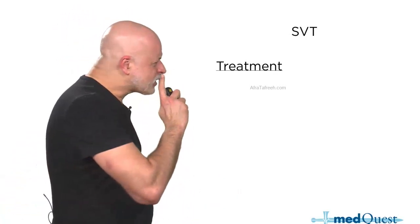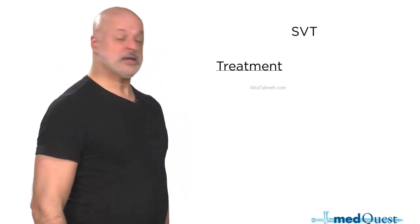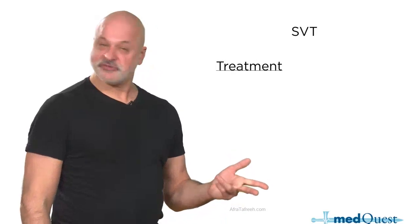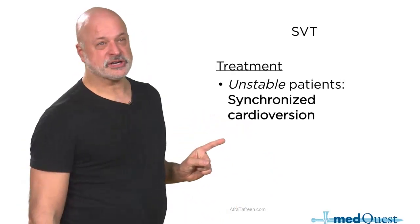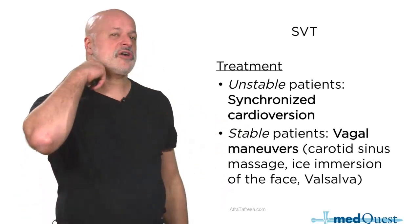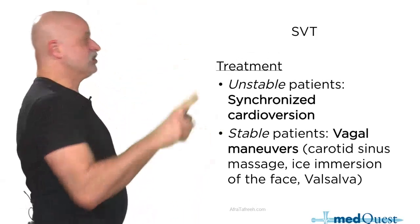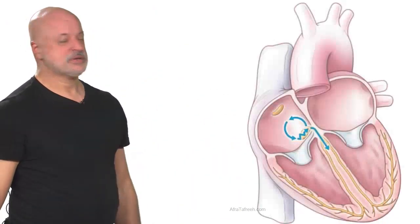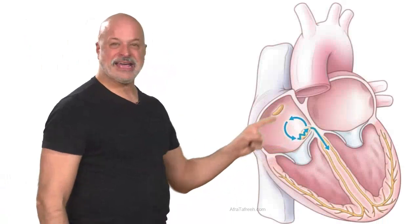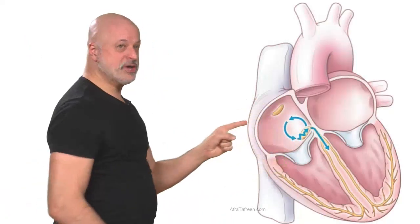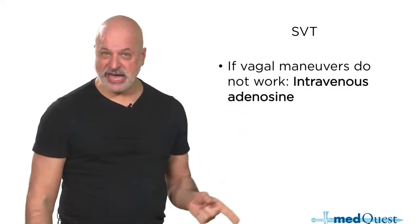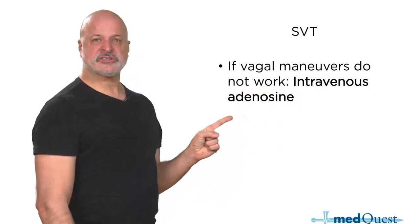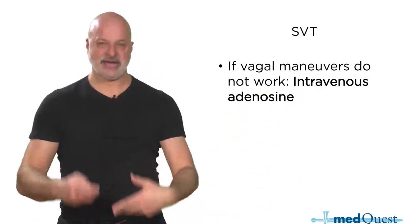To summarize: if unstable — synchronized cardioversion. If stable — vagal maneuvers first: carotid sinus massage, ice water immersion, or Valsalva, then adenosine. SVT is a re-entrant rhythm around the AV node. After converting with adenosine, you need catheter ablation to cure it permanently. Adenosine is both diagnostic and therapeutic — if you're not sure if it's AFib or SVT, give adenosine.